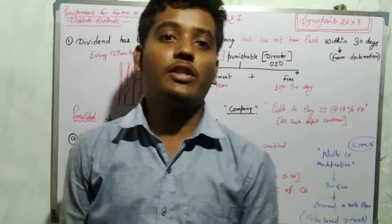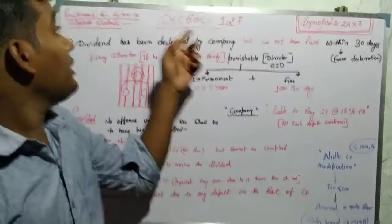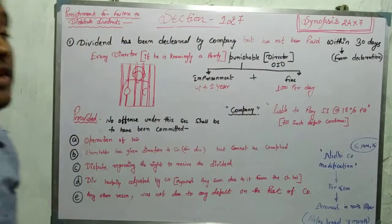Hello friends. My name is Sandeep. Today we are talking about Section 127 of the Companies Act 2013. Section 127 is punishment for failure to distribute dividends.